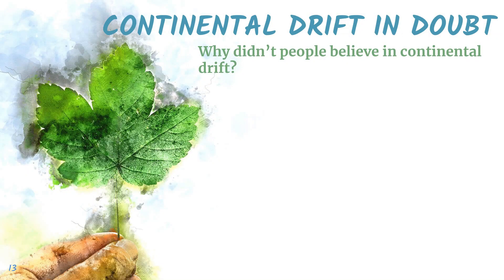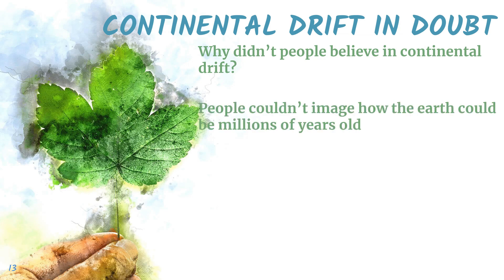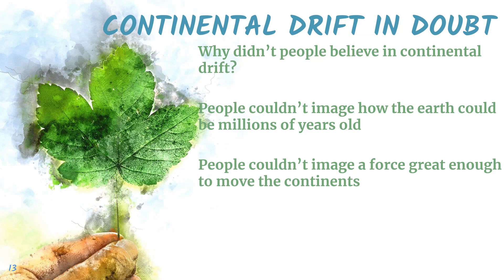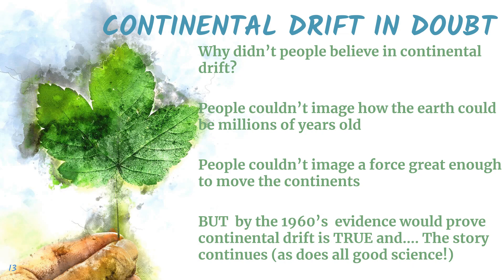With all these evidences, the scientific community still didn't accept the continental drift theory. People couldn't imagine how the Earth could be millions of years old, and Alfred Wegener was unable to propose a force great enough to move the continents. But by the 1960s, new evidence would prove continental drift is true — and that leads us to Lesson 2, which supports the continental drift theory.